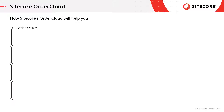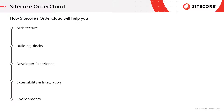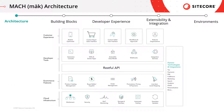Starting at the top, we will discuss Sitecore Order Cloud's architecture, followed by a look at the building blocks and what they could mean to you in terms of flexibility. We'll explore the developer experience and the tools available for your team to develop, customize, and deliver your unique composable commerce solution. We will also look at how Order Cloud can be extended and integrated to the rest of your digital ecosystem, and finally, what environments are available and what each of them is used for. Let's jump into Order Cloud's architecture.